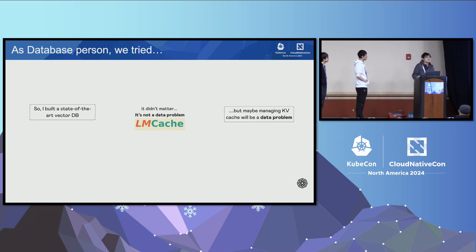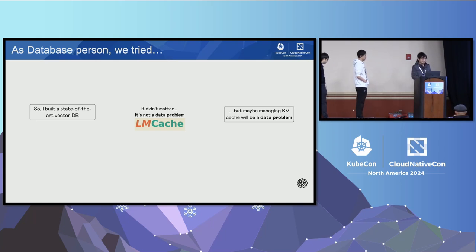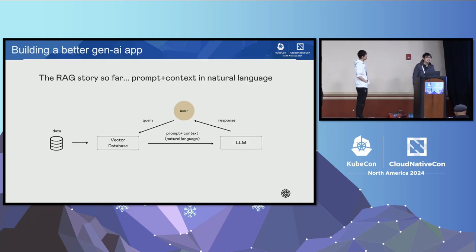But wait — each LRM KV cache is actually on the magnitude of hundreds of megabytes to 2 gigabytes. So we're still having another data problem, and actually a bigger data problem, since what we store is bigger. We need to manage the KV cache efficiently.